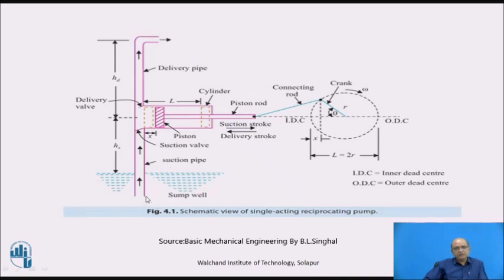Now when we consider the working: initially the piston is at the left-hand extreme position, which is called the inner dead center position. During the reciprocating motion from the innermost position to the outermost position, when the piston moves in the right-hand direction, a vacuum is created inside the cylinder. On the piston, an O-ring of rubber type is mounted which provides a seal, and due to this the vacuum is created inside this region.